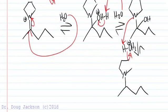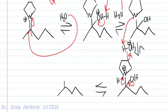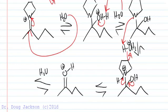Now we've got a good leaving group in pyrrolidine, so when the oxygen lone pair reforms a pi bond it can kick off pyrrolidine from this species. We're one step away — a simple acid-base proton transfer — and we've got our alkylated ketone. And we're done.